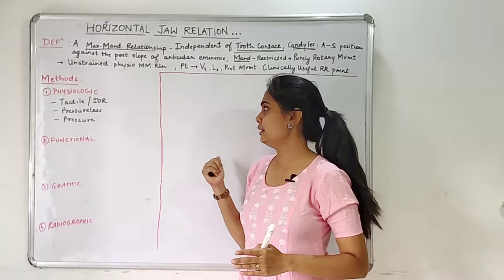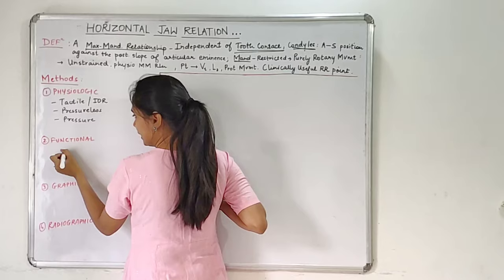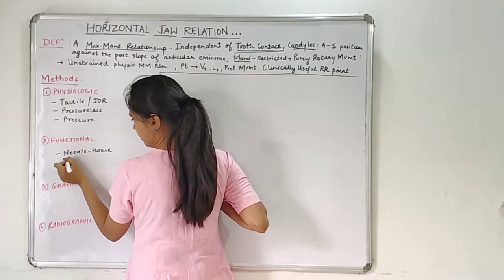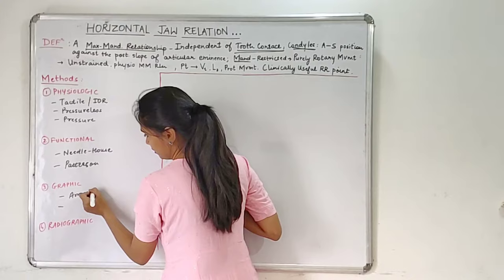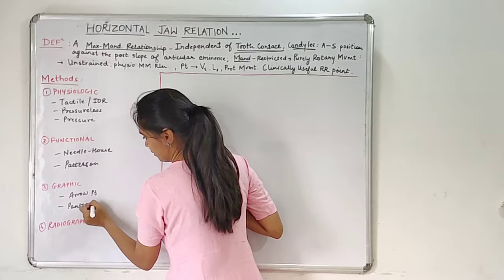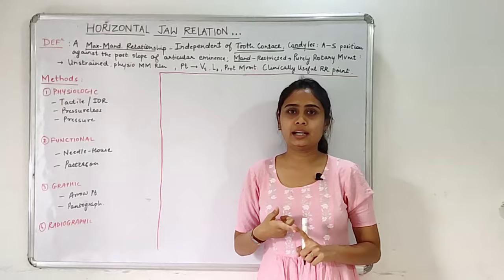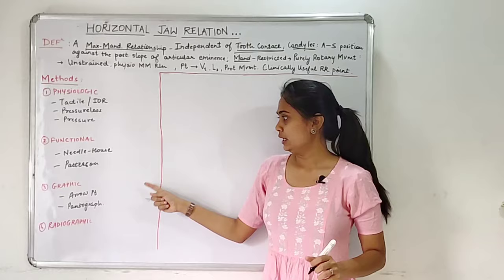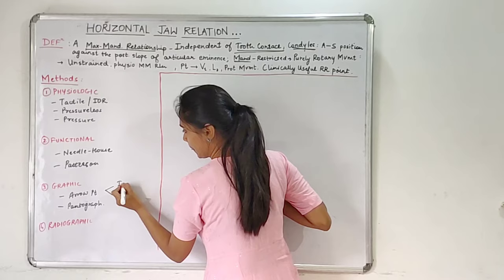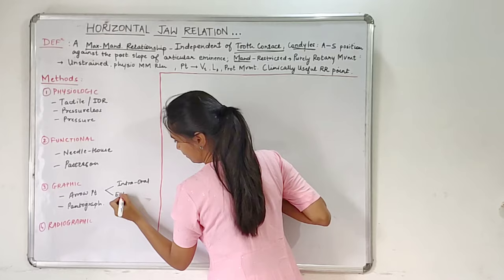In physiologic we have three subtypes: tactile or interocclusal record, pressureless, and pressure. In functional it is divided into two subtypes: the needle house method and the Patterson method. In graphic it is divided into arrow point, which is further divided into intraoral and extraoral, and the pantograph. And lastly we have the radiographic method.